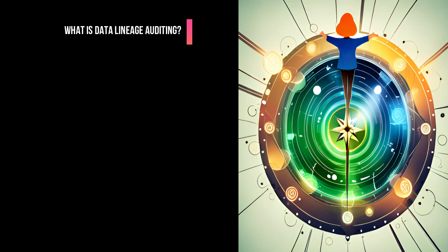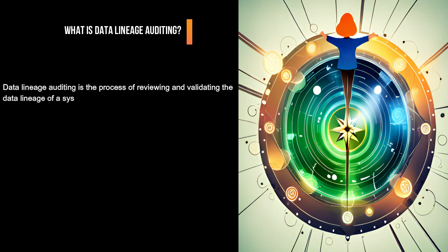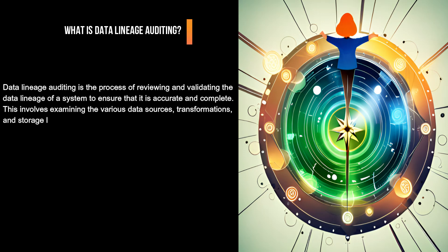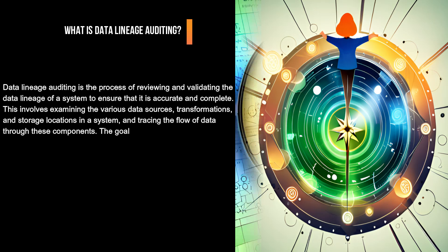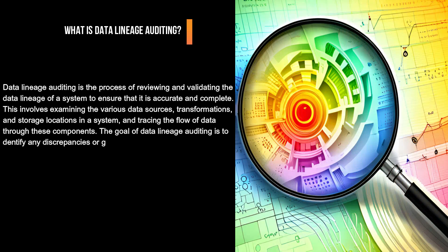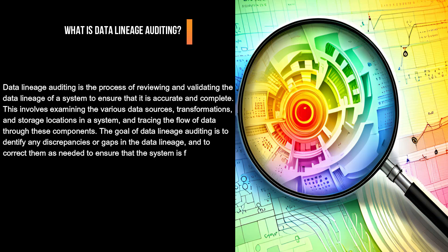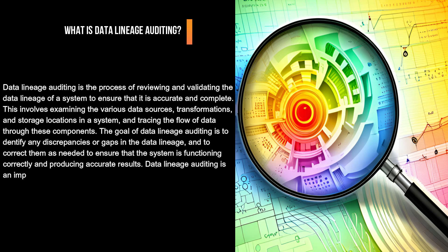What is Data Lineage Auditing? Data Lineage Auditing is the process of reviewing and validating the data lineage of a system to ensure that it is accurate and complete. This involves examining the various data sources, transformations, and storage locations in a system, and tracing the flow of data through these components. The goal of Data Lineage Auditing is to identify any discrepancies or gaps in the data lineage, and to correct them as needed to ensure that the system is functioning correctly and producing accurate results.